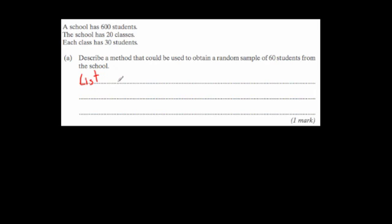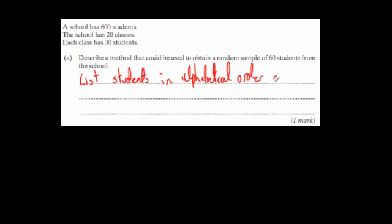First of all, list all the students in alphabetical order and assign each one a number from 1 to 600. So put them in alphabetical order and give them each a number from 1 to 600.